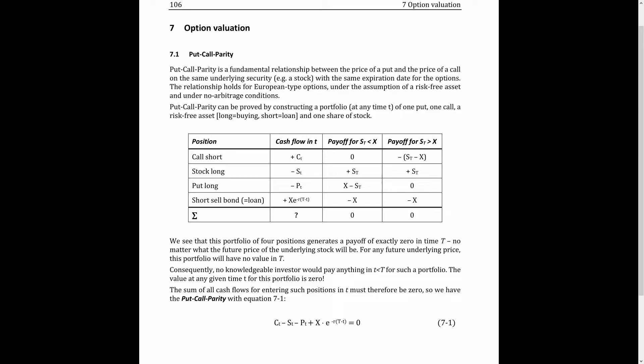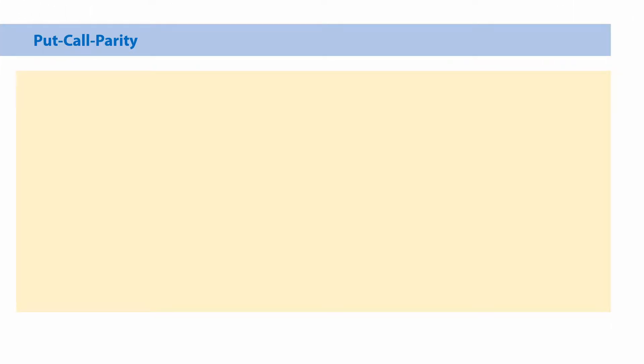The option must be European type, which means they cannot be exercised early but only at expiration. In addition, both options refer to the same stock, have the same exercise price and the same expiration date. If these assumptions are met, we can develop a portfolio of these four financial instruments that has very unique features.